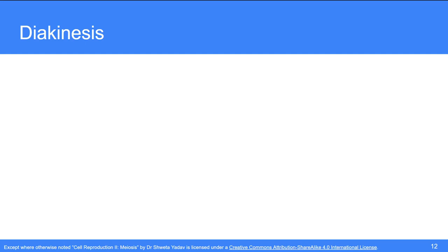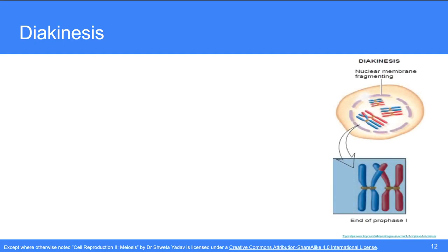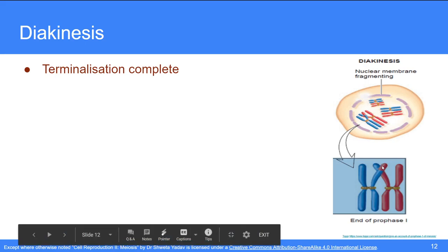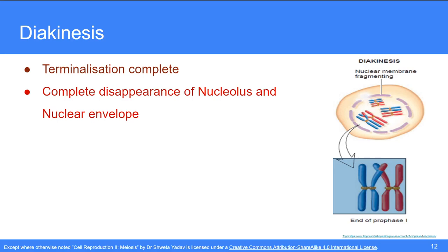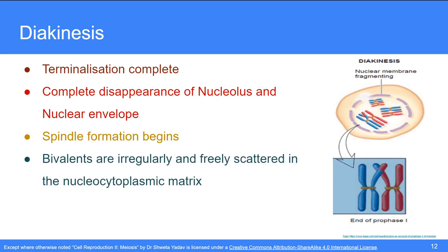The fifth and last subphase of prophase 1 is diakinesis. Terminalization of the chiasmata is completed as they move towards the chromosome ends. There is complete disappearance of the nucleolus and nuclear envelope, and spindle formation begins just like in mitosis. The bivalents are now irregularly and freely scattered in the nucleocytoplasmic matrix, and with this, prophase 1 comes to an end.